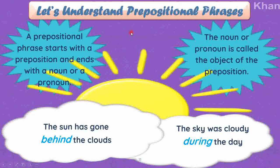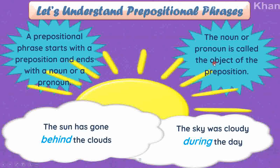Now let's understand what a prepositional phrase is. You know 'prepositional' means something to do with the preposition. A phrase is a group of words which is not a complete sentence. If I say 'prepositional phrase,' it implies that this phrase should have a preposition in it. A prepositional phrase starts with a preposition and it ends with a noun or a pronoun. If we need to find a prepositional phrase, first look for the preposition — because the prepositional phrase starts with the preposition and ends with a noun or a pronoun. Also keep in mind that the noun or pronoun in the prepositional phrase is called the object of the preposition.